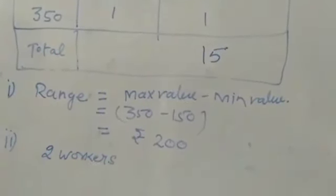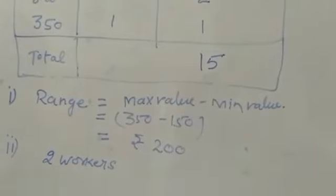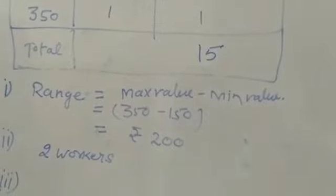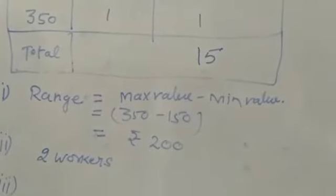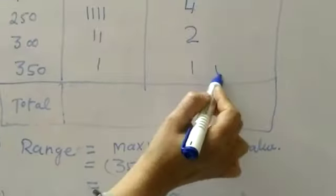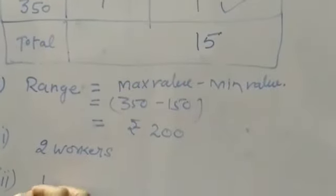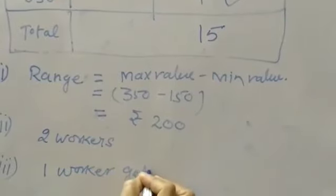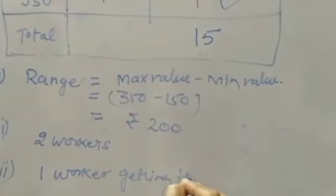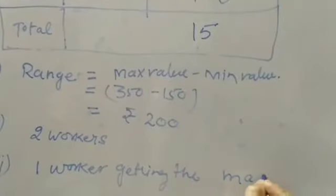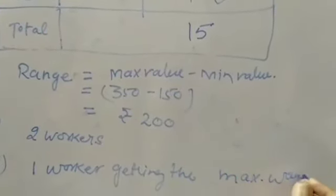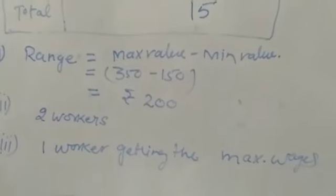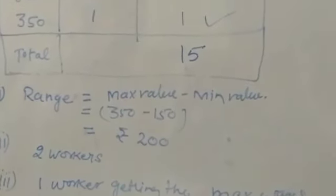Part 3: How many workers are getting the maximum wages? Maximum is one worker getting the maximum wages. So the question is very simple, try this. Thank you and have a nice day.